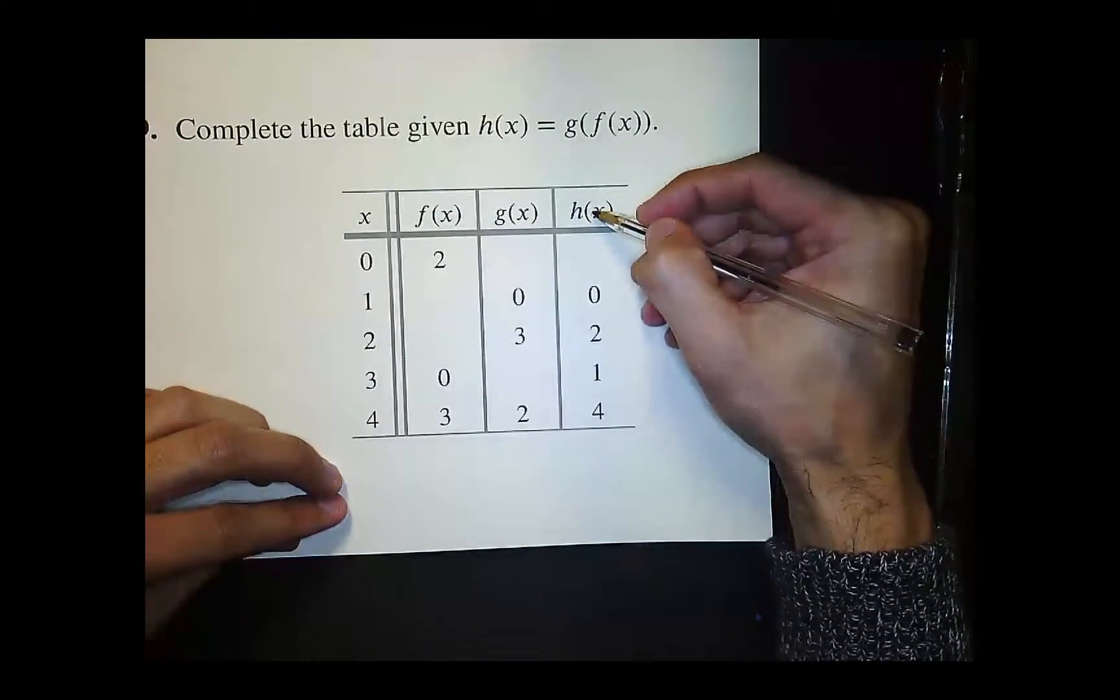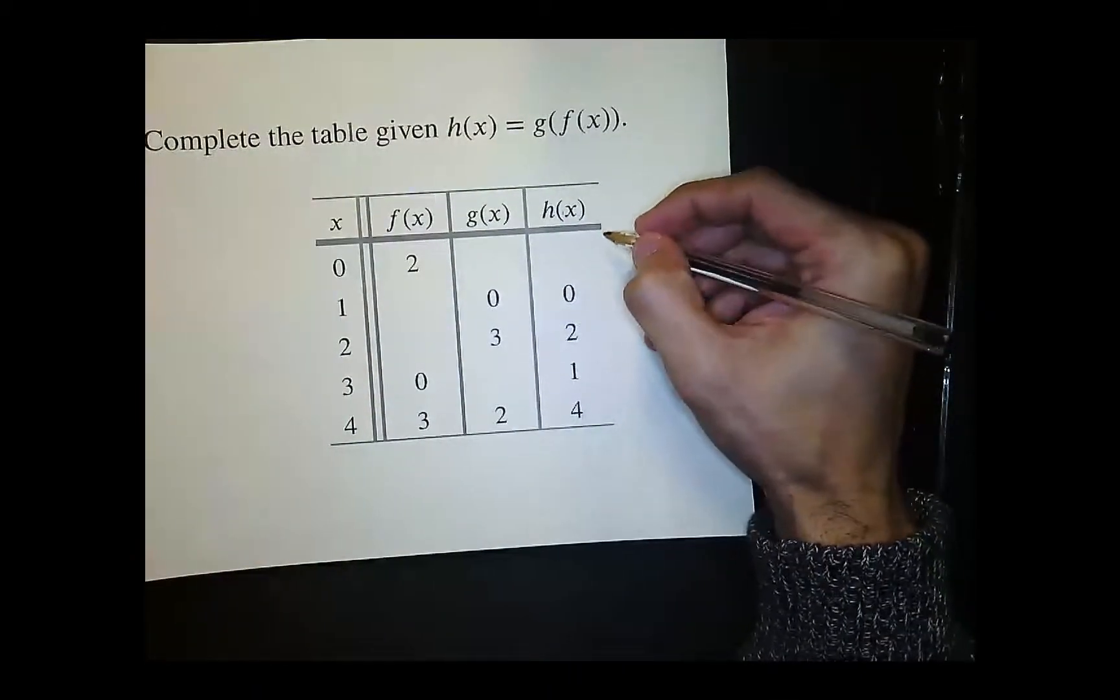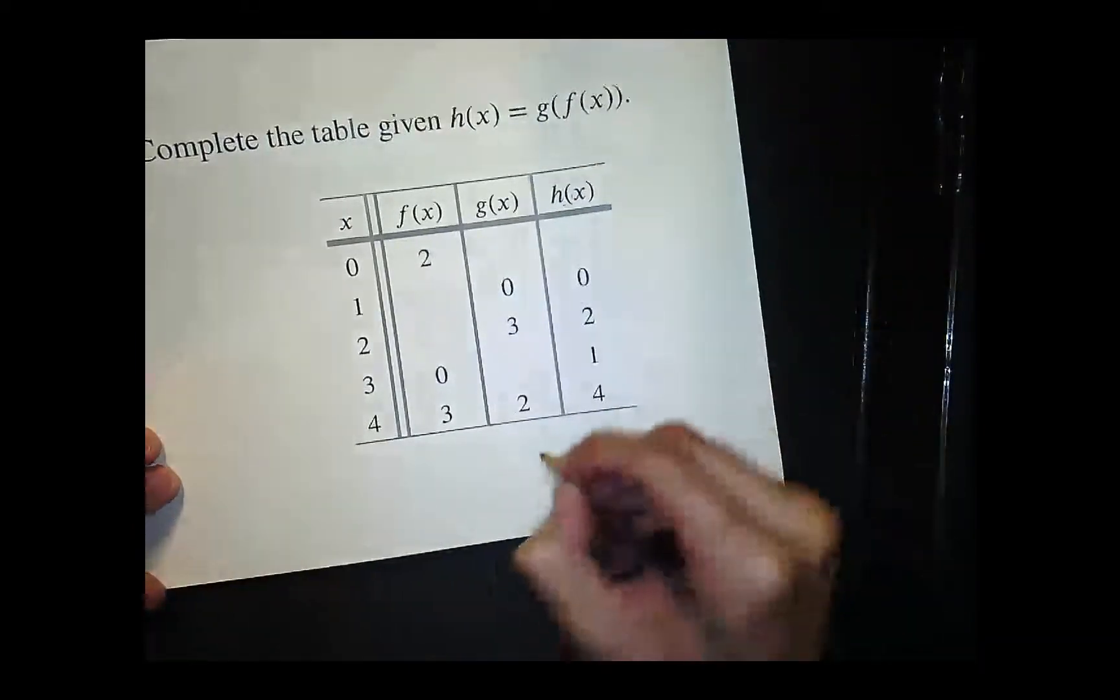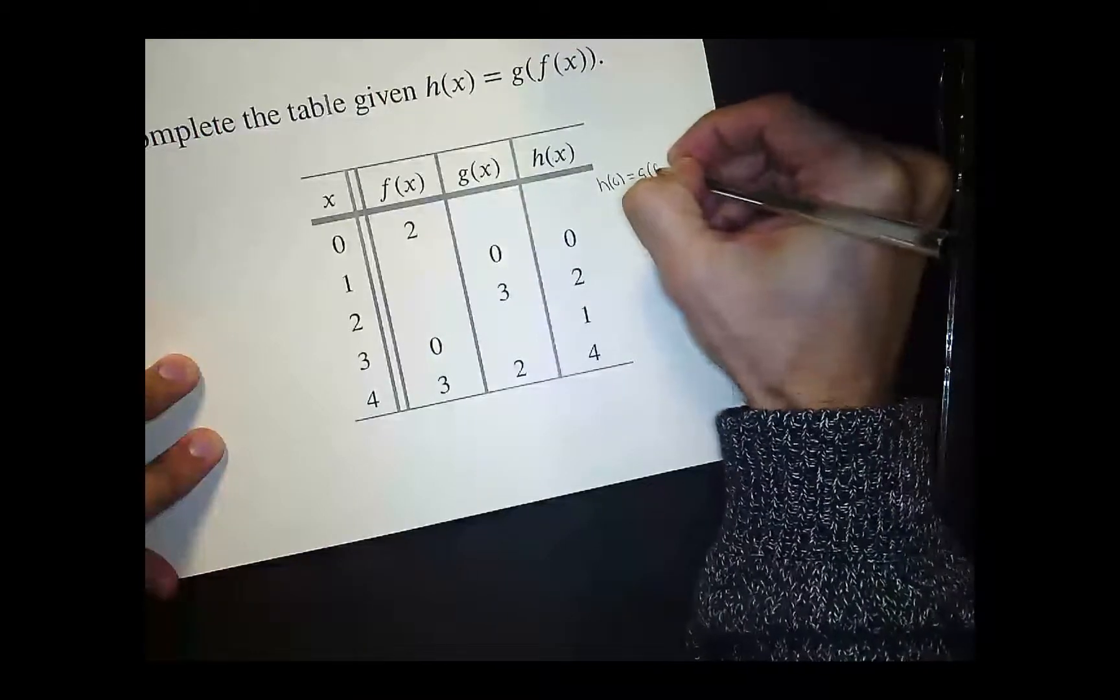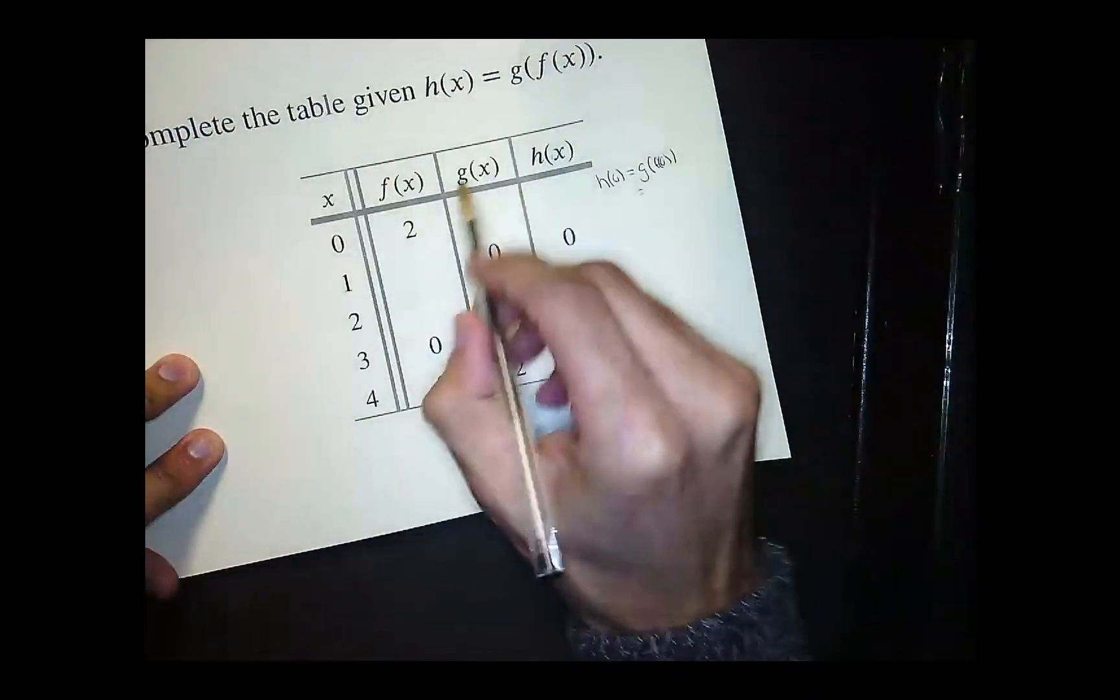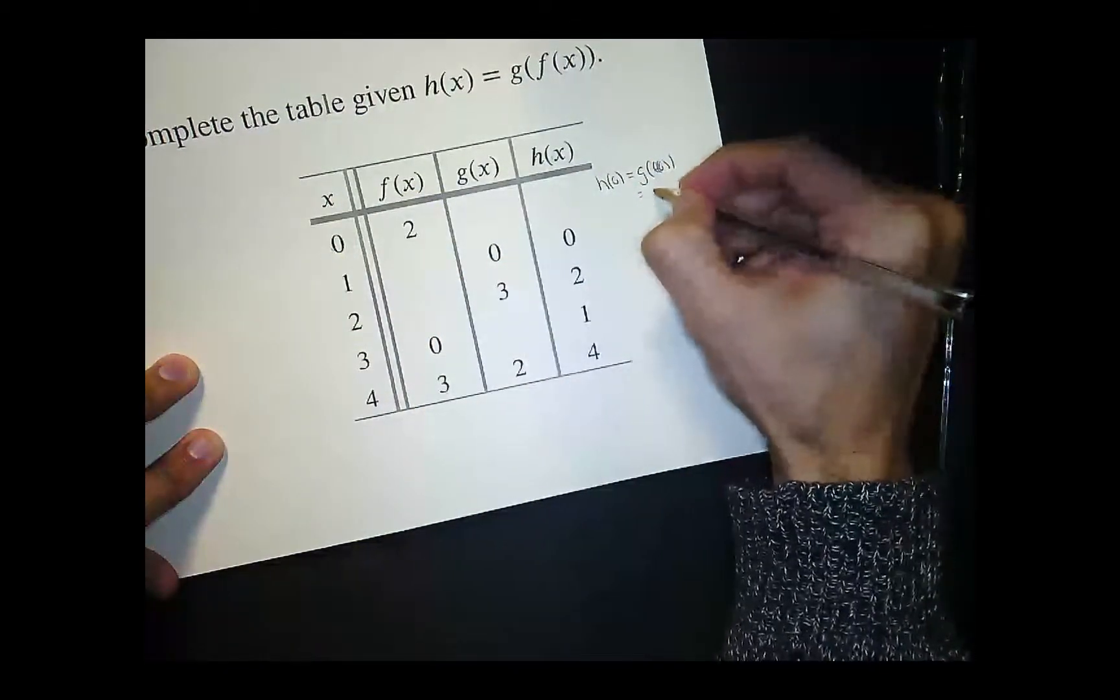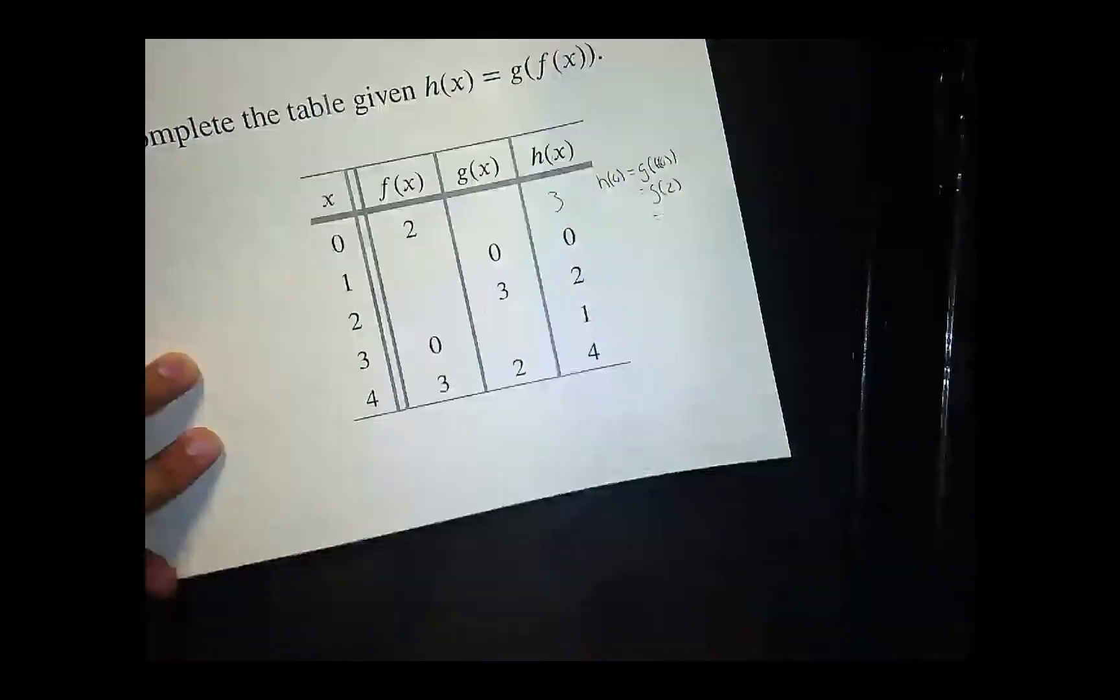Again, you want to start by working with the rightmost column. So here we are looking for h of 0. And let me work it here. h of 0 is going to be equal to g of f of 0. So it means find f of 0 first. f of 0 is 2. So it's going to be g of 2 and then g of 2 is 3. So I get 3 for this one.